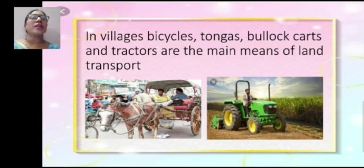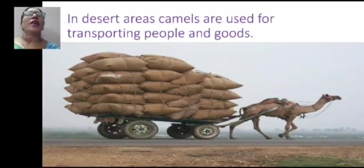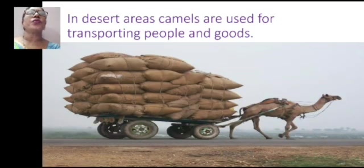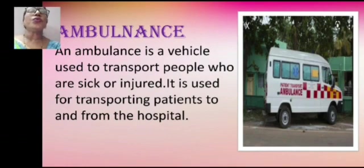In villages, bicycles, tangas, bullock carts and tractors are the main means of land transport. In desert areas, camels are used for transporting people and goods. An ambulance is a vehicle used to transport people who are sick or injured. It is used for transporting patients to and from the hospital.